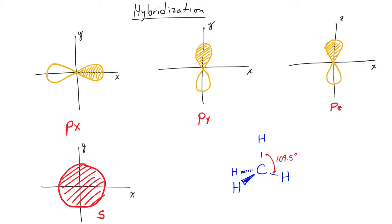The px is 90 degrees to the py, which is 90 degrees to the pz — so the x, y, and z directions. One of the things that's interesting is in a molecule that has four bonds, such as methane, the bond angles between the hydrogen atoms are 109.5 degrees, which is not 90 degrees. If the bonds are being made by the overlaps of orbitals on the hydrogen atoms with orbitals from the carbon atom, then why are the bond angles not 90 degrees? Why are they 109.5 degrees?